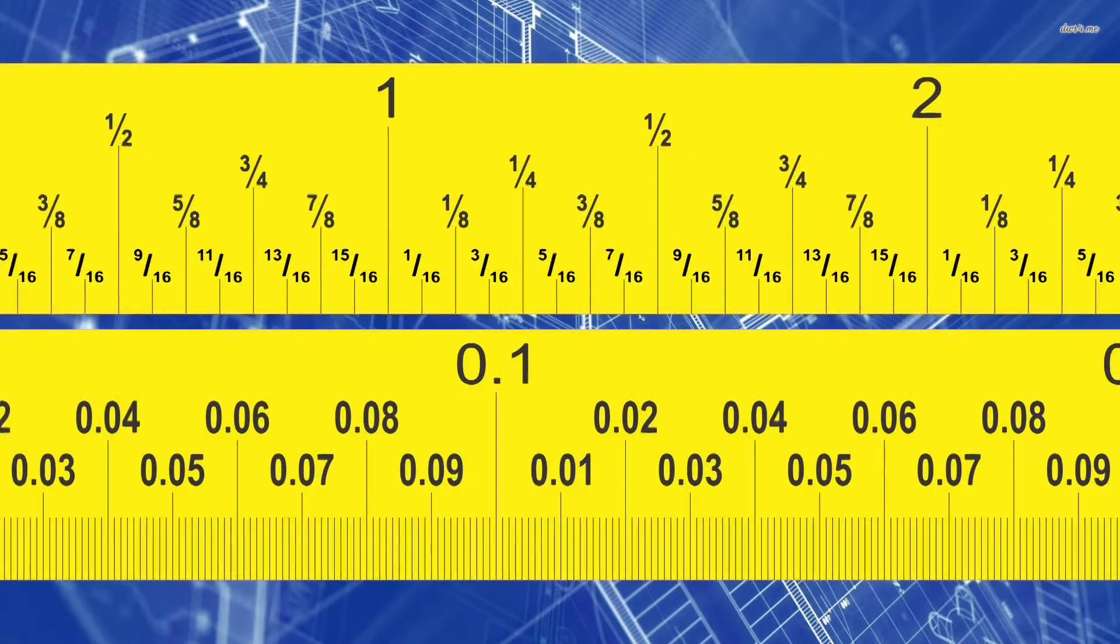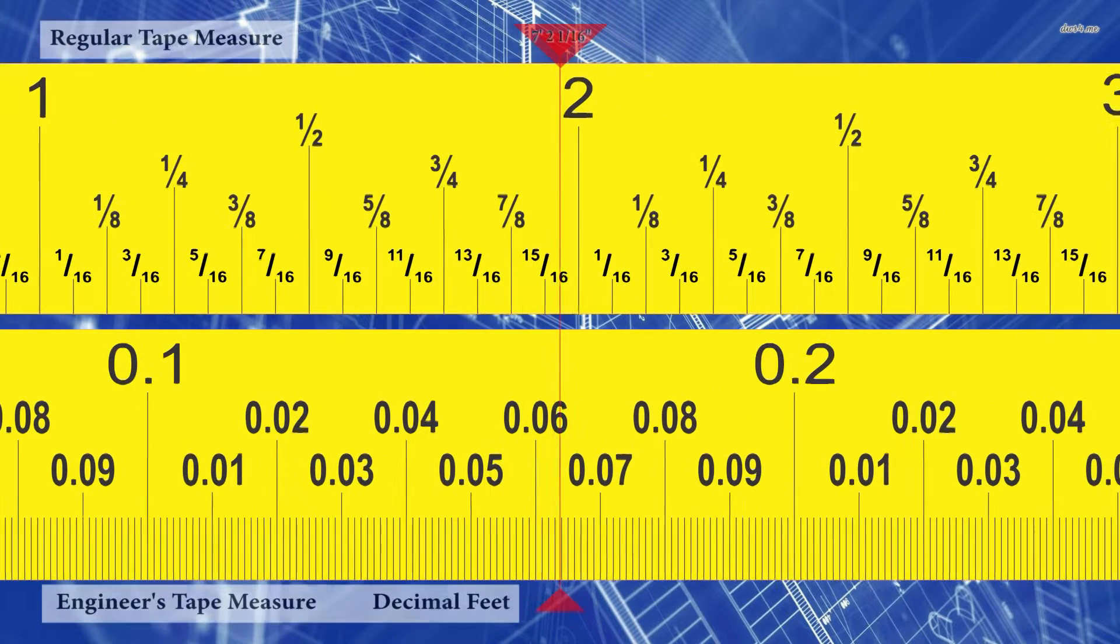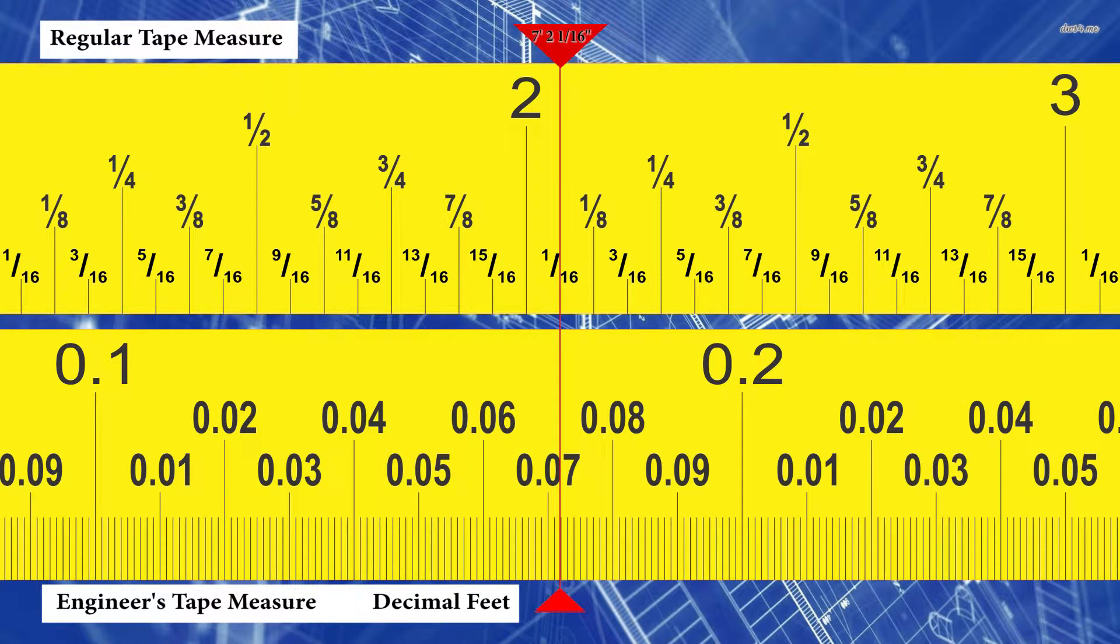Alright let's check this answer against our tape measures. Let's draw a line down from 7 foot 2 and 1 sixteenth inches through our engineer's tape measure. And well we'll probably need to pause the video to see this one properly but it should travel through 7.172 feet.